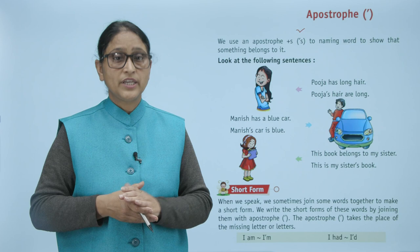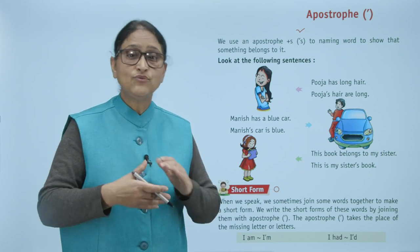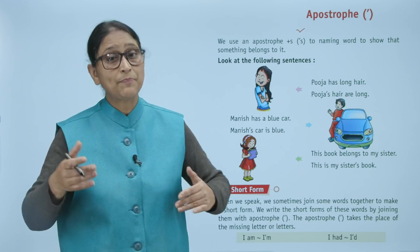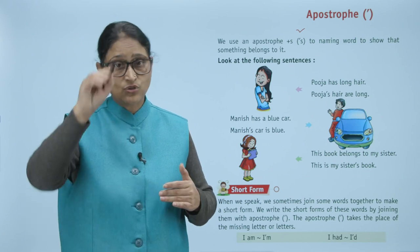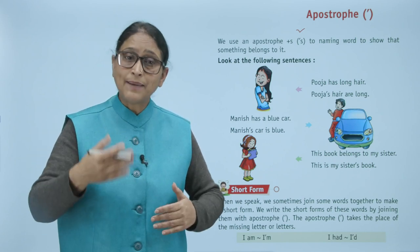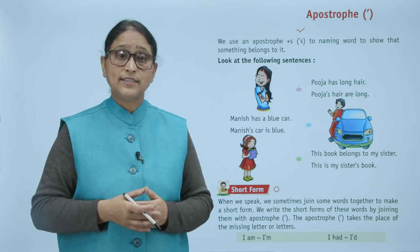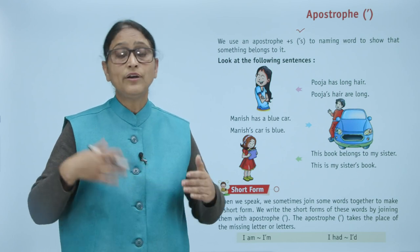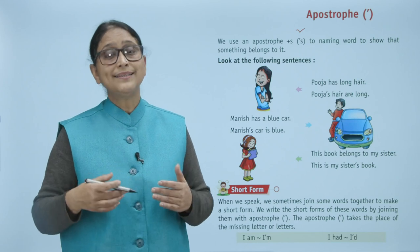Now, short forms. When we speak, we sometimes join some words together to make a short form. We write the short forms of these words by joining them with an apostrophe. The apostrophe takes the place of the missing letter or letters.